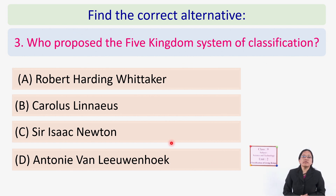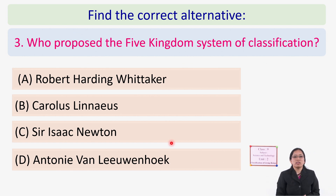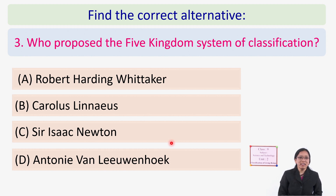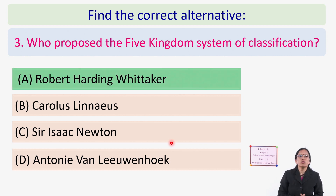Next question: Who proposed the five kingdom system of classification? The answer is Robert Harding Whittaker.